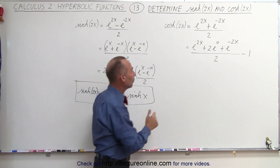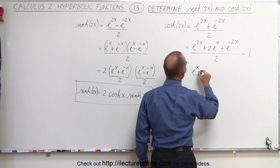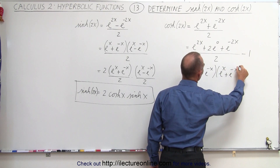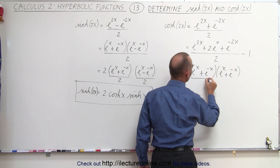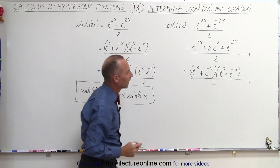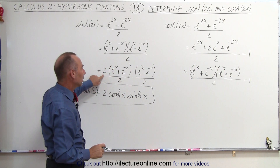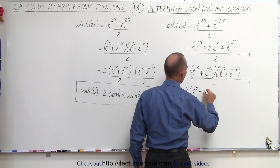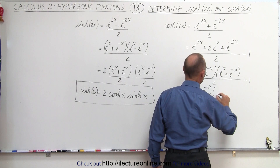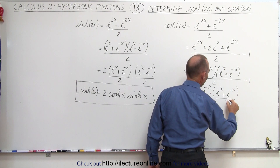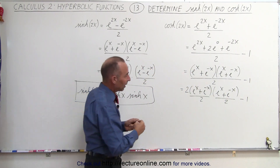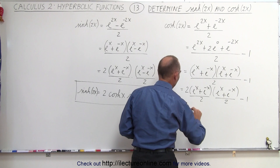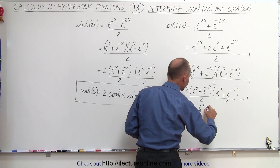Now we can factor the numerator into e to the x plus e to the minus x, multiplied by e to the x plus e to the minus x, because when we multiply these together we get back the numerator. This is still divided by 2, minus 1. Just like before, we multiply the numerator and denominator by 2, giving us 2 times e to the x plus e to the minus x divided by 2, times e to the x plus e to the minus x divided by 2, minus 1. We recognize each factor as the hyperbolic cosine, so this gives us 2 times the hyperbolic cosine squared of x minus 1.